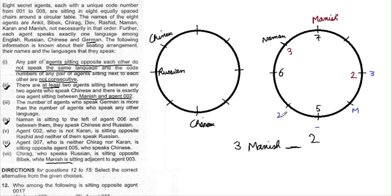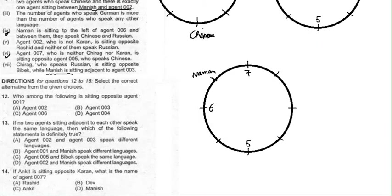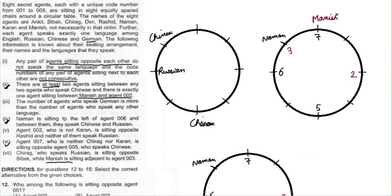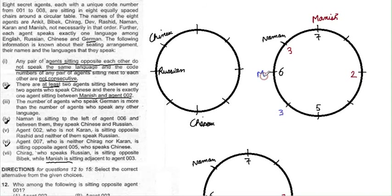We make another circle for the second valid case. With 003 at a specific position, Manish follows, then a blank, then 002. Checking remaining positions for 003 shows they either violate the no-consecutive rule or conflict with existing placements, confirming only two valid cases initially, now reduced to one after applying condition 5.